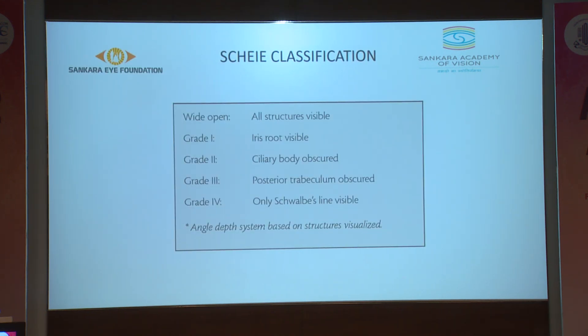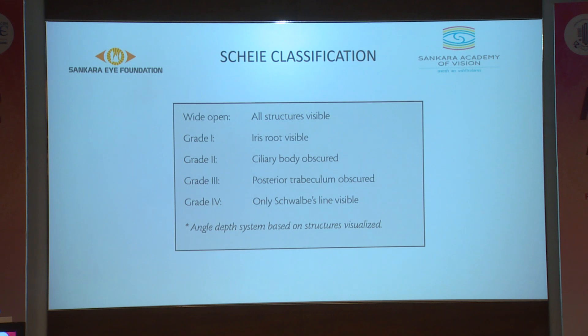Scheie's classification gave grade 1 as iris root being visible, grade 2 as ciliary body obscured, grade 3 as posterior trabeculum obscured, and grade 4 as only Schwalbe's baseline visible.